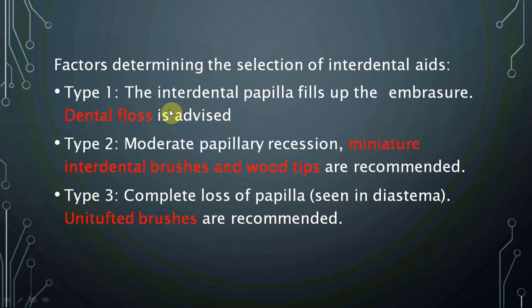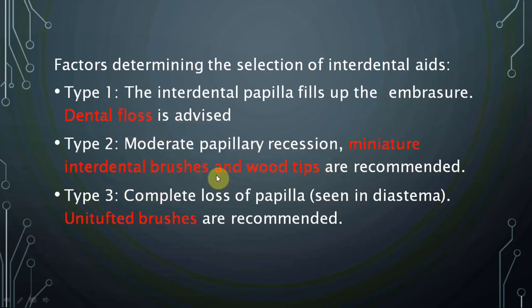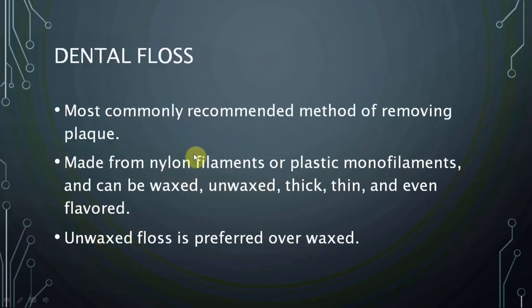The choice of interdental aid depends on the type of interdental papilla — Type 1, 2, or 3. Type 1 is a very close embrasure, for which dental floss is advised. Type 2 has papillary recession, so a miniature interdental brush or wooden tip can be used. Type 3 is a complete loss of papilla, for which unit interdental brushes can be used.